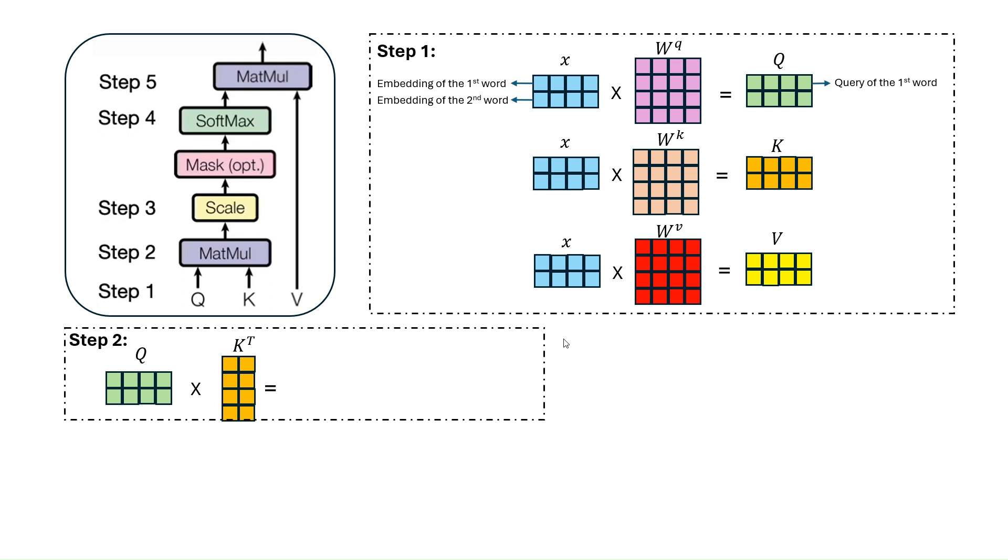In step two, we compute the similarity between the query matrix and the key matrix. This can be done by multiplying the query matrix by the transpose of the key matrix. This gives us a similarity matrix. For example, the second element in the first row of this matrix shows the similarity or relationship between the first and second word.